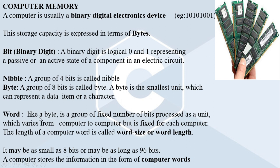Next is the computer word. Just like the byte, a computer word is a group of fixed number of bits processed as a unit, which varies from computer to computer but is fixed for each computer. The length of the computer word is called word size or word length. For example, a byte is a computer word of length 8 bits. We also have 16-bit computer words, and some computers follow a computer word length of 64 bits, meaning they can process 64 bits of information at a time.